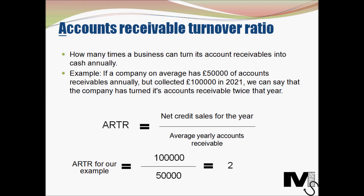The formula for accounts receivable turnover ratio is: net credit sales for the year divided by the average yearly accounts receivables. In our simple example, that's £100,000 divided by £50,000, which equals 2. The average yearly accounts receivables is calculated by adding the beginning and end receivables of the year and dividing by two.